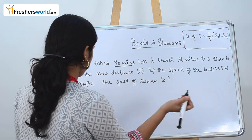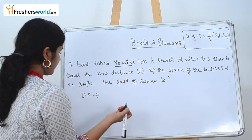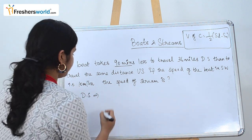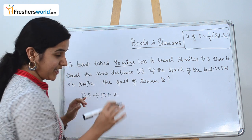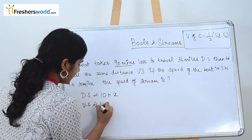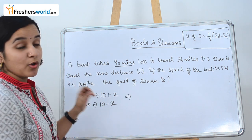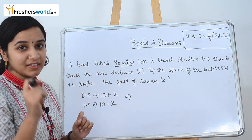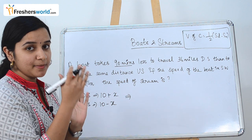First we look at downstream and upstream speeds. The speed of the boat in still water is 10, and we take the unknown stream speed as x. For downstream we add: 10 plus x. For upstream we subtract: 10 minus x. The question also states it takes 90 minutes less to travel 36 miles, meaning the difference between downstream and upstream travel times is 90 minutes.